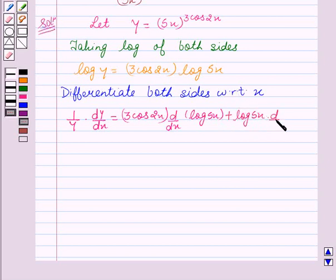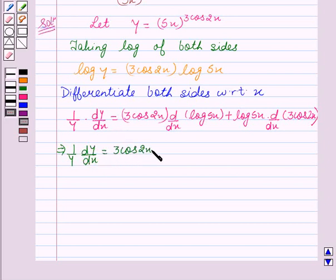This implies 1 over y times dy/dx equals 3cos2x times the differentiation of log 5x, which is 1 over 5x times 5, plus log 5x times d/dx of 3cos2x.